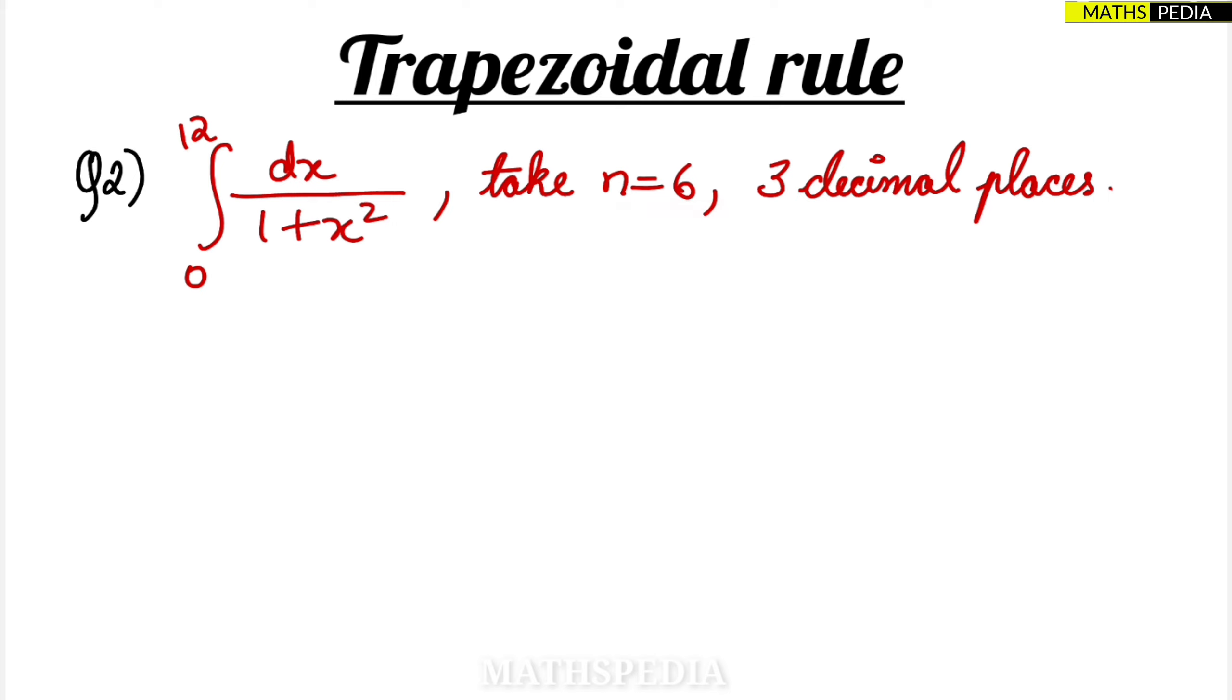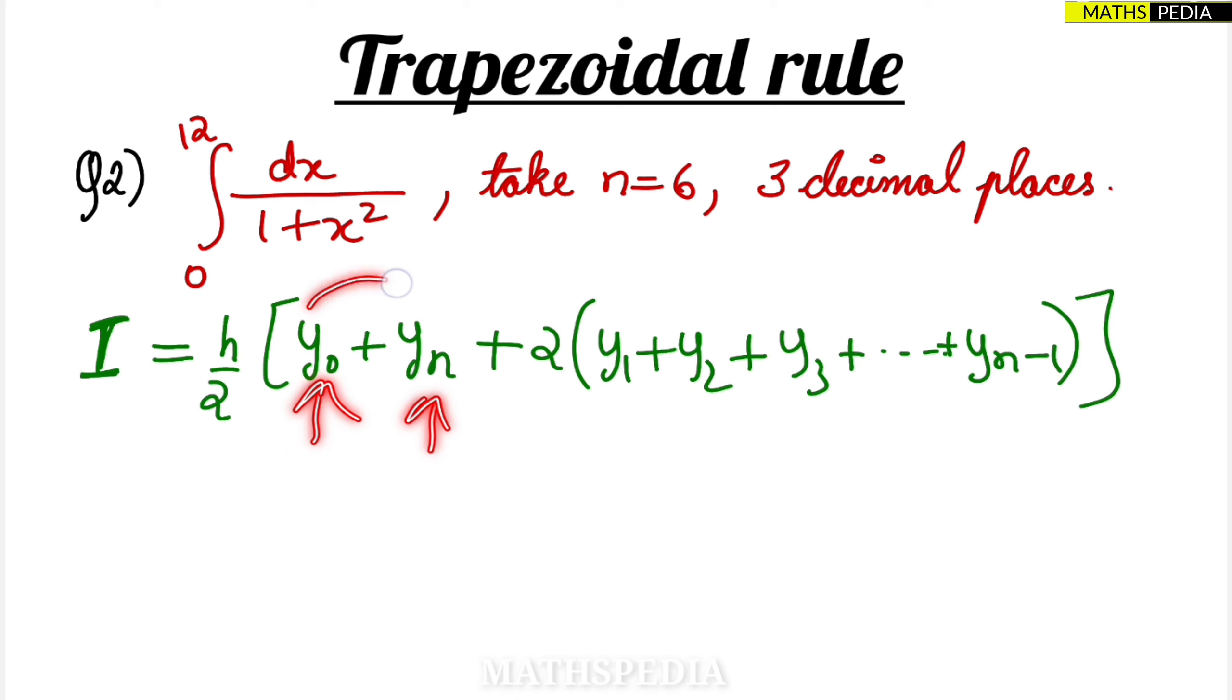So n is equal to 6, we have directly given. First and foremost thing is write the formula, then only we will understand what is given in the question. So what is the integration? I will denote with I, the definite integral which is equal to h by 2 into trapezoidal formula: first term which is y0 plus the last term which is yn plus 2 times of y1 plus y2 plus y3 and so on, n minus 1, because I cannot consider the last term. So the second last term you have to consider.